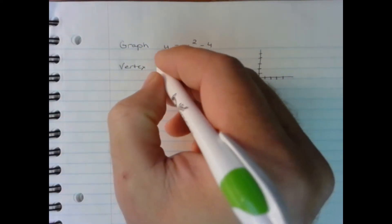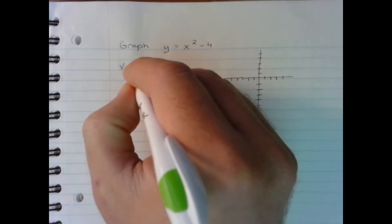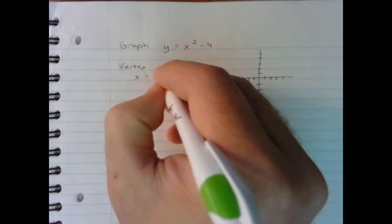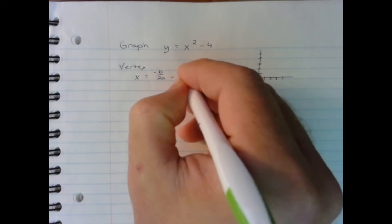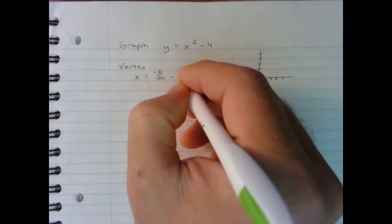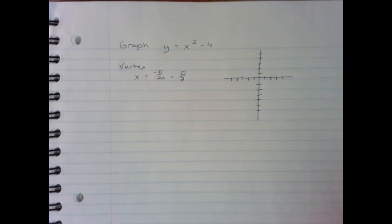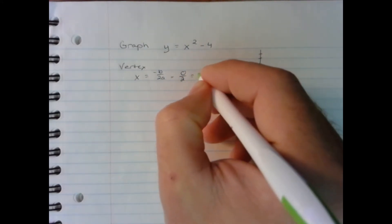If you remember, the x-coordinate can be found by x equals negative b over 2a. There is no b term, so that means it's 0. 2 times a would be 2 times 1, which is 2. So we know we have an x-coordinate of 0.